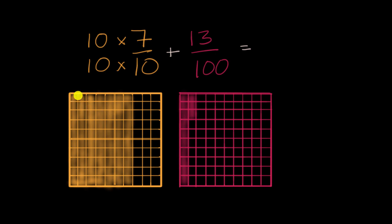Before you had seven of the tenths filled in. Now, you have 70 of the hundredths filled in. Or another way to think about it, we multiplied the numerator by 10, and we multiplied the denominator by 10.